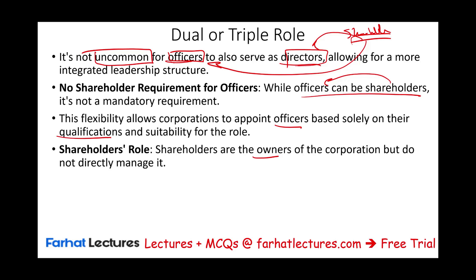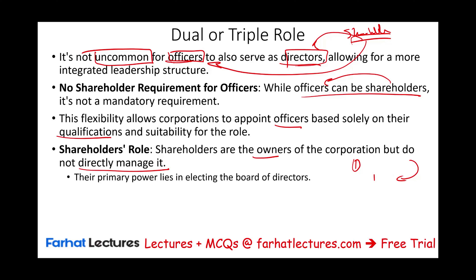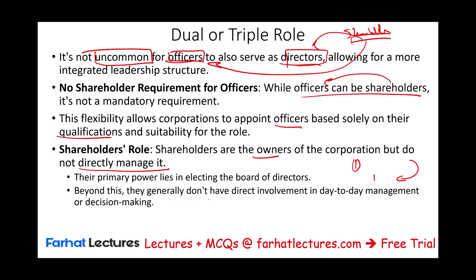The shareholders are the owners of the corporation but do not directly manage it — in large companies, they don't, because they're so disconnected. If you own shares in publicly traded companies like Amazon, Apple, or IBM, the primary role of a shareholder is to elect the board of directors. Shareholders are on top, then the board of directors, then corporate officers. Shareholders generally don't have direct involvement in day-to-day operations, especially in large companies.